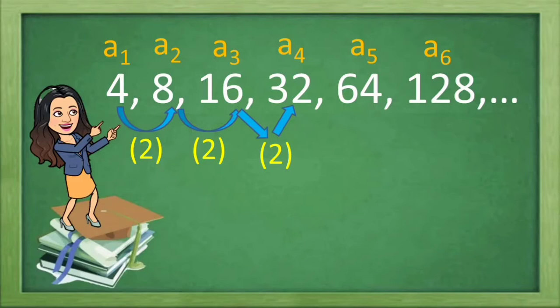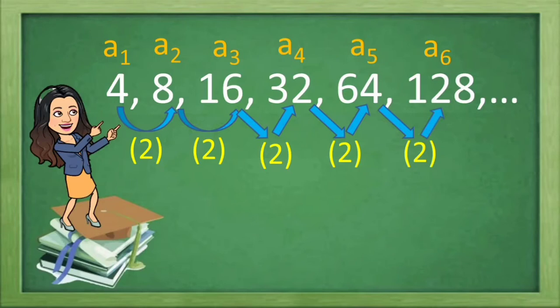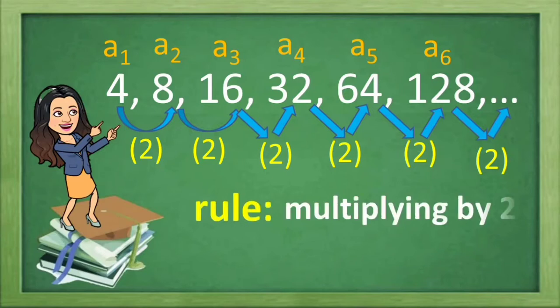How about if 32 multiplied by 2? Is that equal to 64? Yes, that's the fifth term. And if we multiply 64 by 2, will we arrive on 128 on the sixth term? Yes. But how about if we multiply 128 times 2? Can we get the next term? Yes, of course. And what is the rule? That is, multiplying by 2.